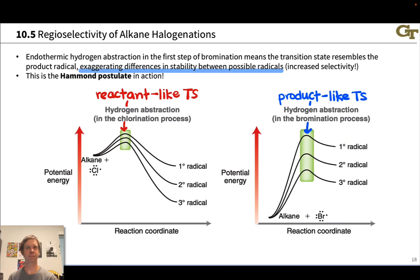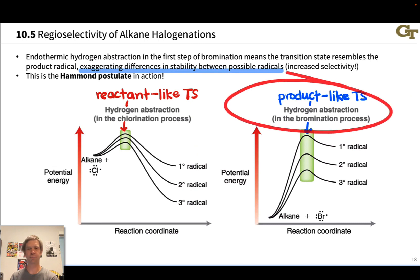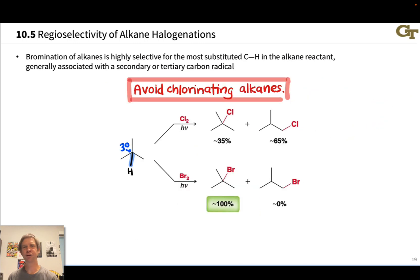It's all about the Hammond postulate in action here. Long story short, bromination is much more regioselective than chlorination, and we're going to use bromination in all of our halogenations of alkanes other than methane.